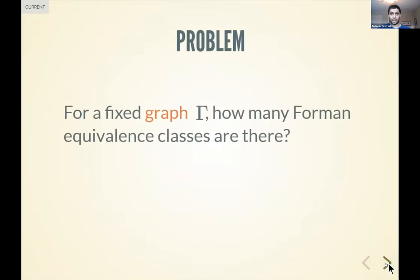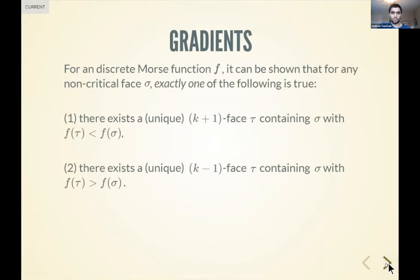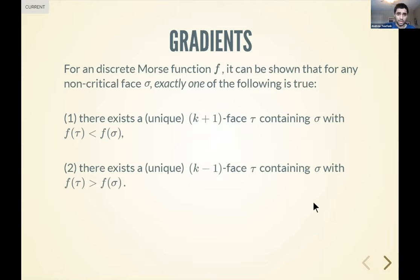That leads us to the question: if we fix a complex — or in this case a graph, to keep things straightforward — how many classes are there in this equivalence relation? It was fairly messy, but the answer turned out to be quite interesting. Now let's try to get away from looking at these numbers and find a different way to think about Forman equivalence classes that doesn't rely so much on numbers.